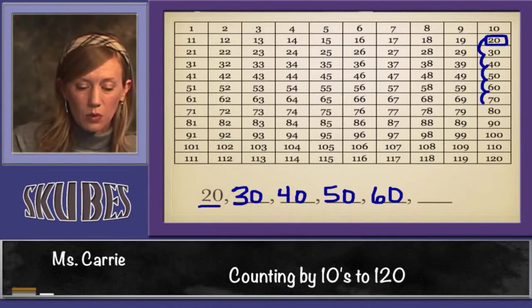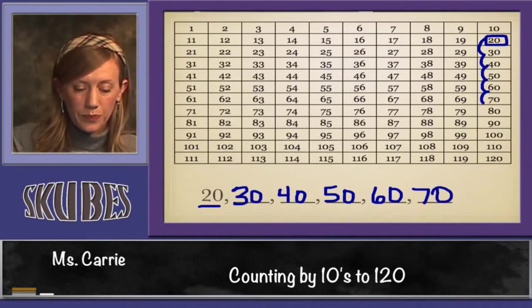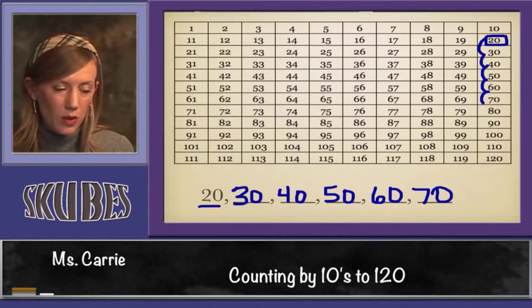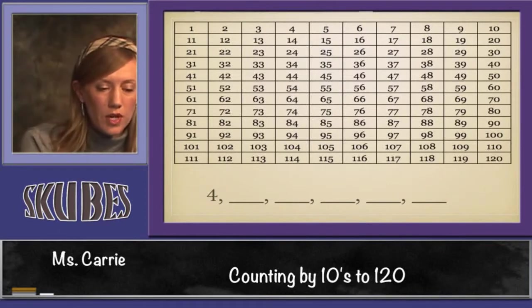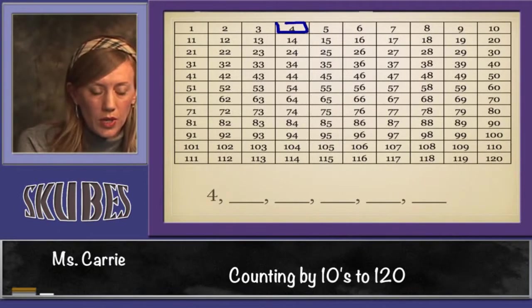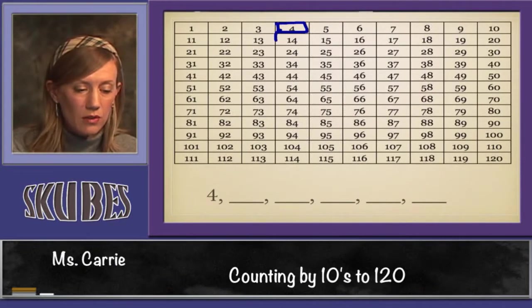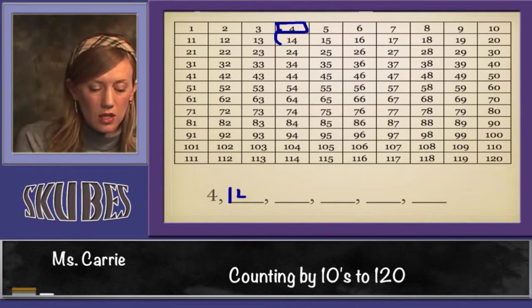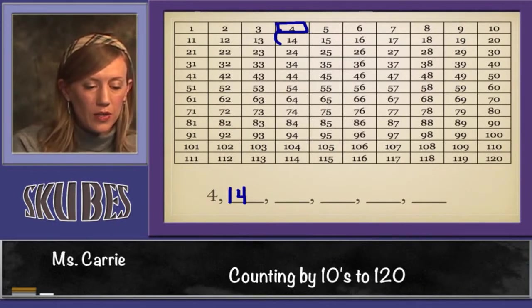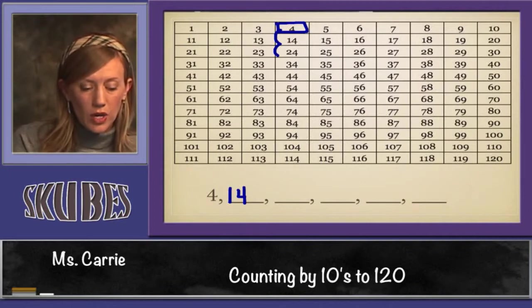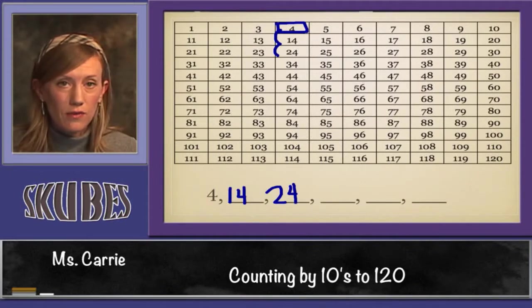Let's look at another number that we can start with. Let's start with the number 4 this time. Here's our starting point, and we're going to add 10 each time we jump down. We're at 14. Jump down again, now we're at 24. Notice that all of these numbers end in 4.